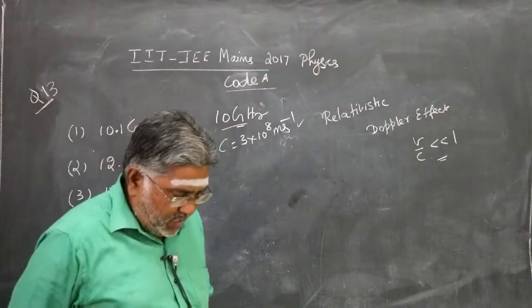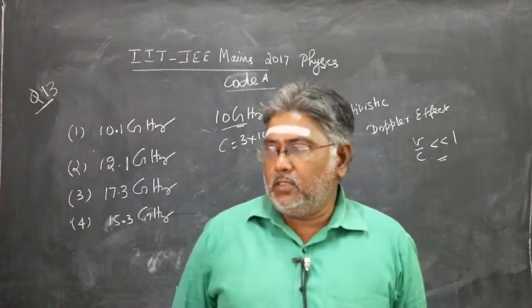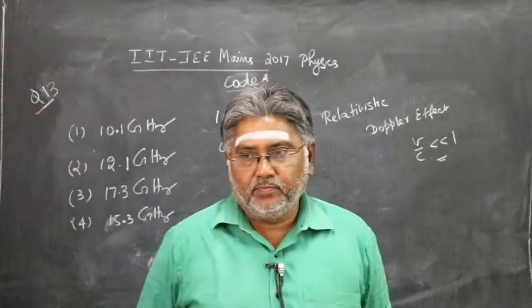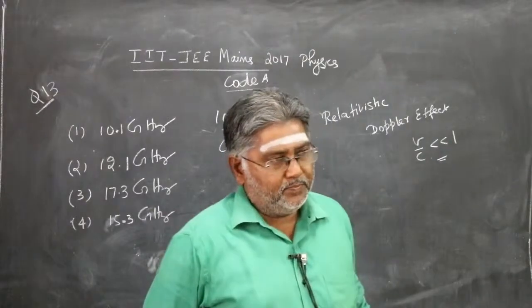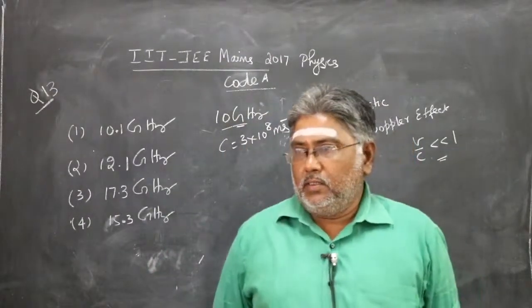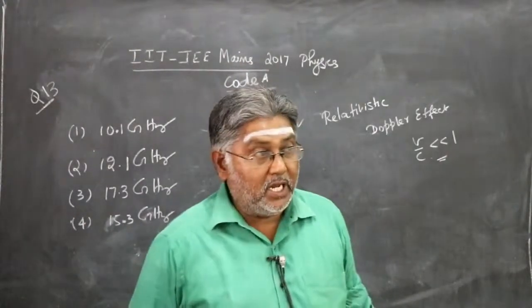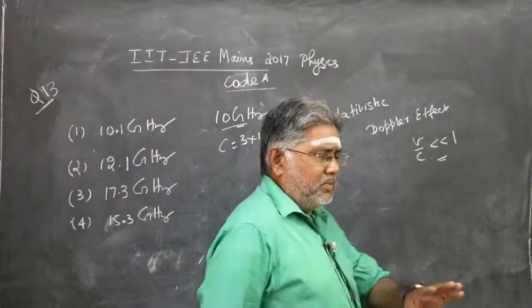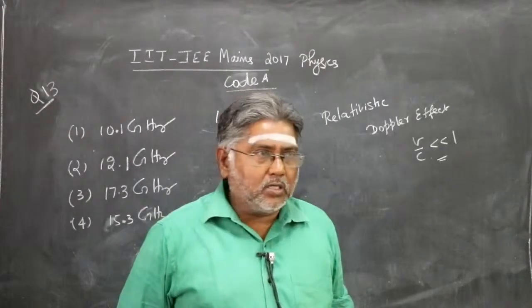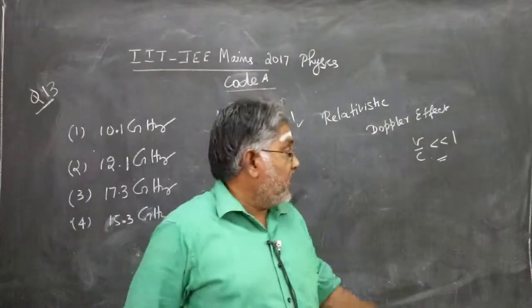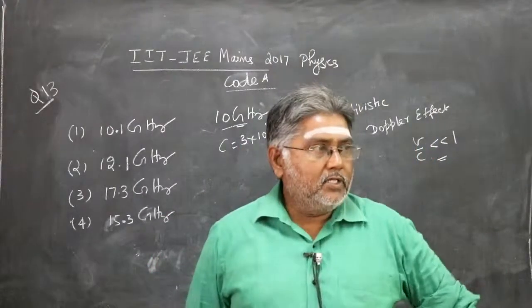Then what is the difference? If there is a relativistic case, you will have to consider special relativity ideas. The concepts of special relativity should be involved. Things such as time dilation should be considered. Or I can say in a very plain way: time is not absolute in that case. Time is relative when V by C is not negligible.